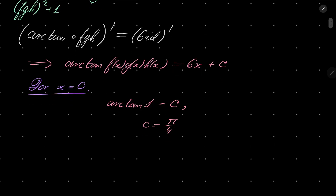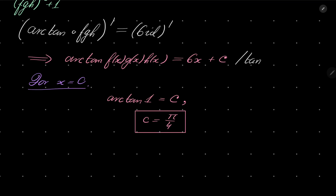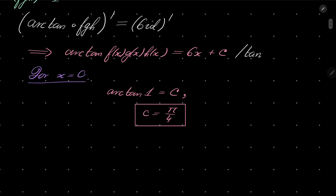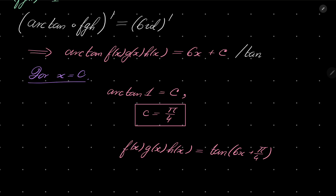Notice that we can take tangent on both sides, giving us f(x)g(x)h(x) = tan(6x + π/4), for x close to 0. Now we have this result, and what we wish to do is find f(x) explicitly, so let's go back to our system of equations.